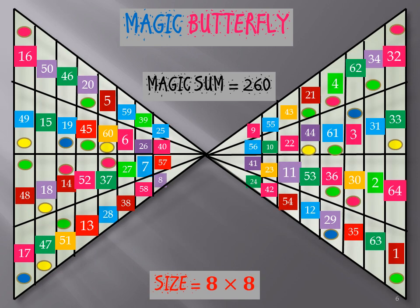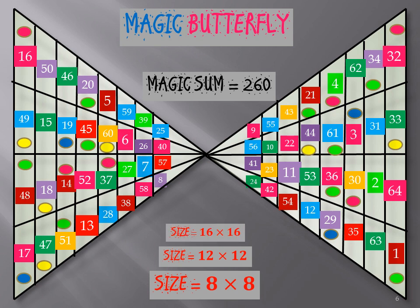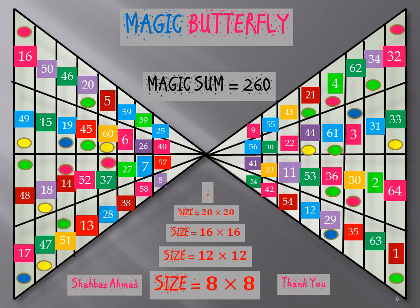This is how you can make a 4 by 4 magic butterfly. Similarly, you can make higher butterflies — for example, a butterfly of size 8 by 8, where each wing has 8 cells horizontally and 4 cells vertically, with a magic sum of 260. You can also make 12 by 12, 16 by 16, 20 by 20 — you can only make butterflies of sizes that are multiples of four. Hope you enjoy this video, thank you!